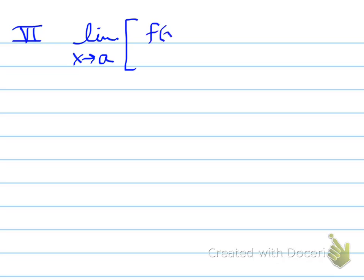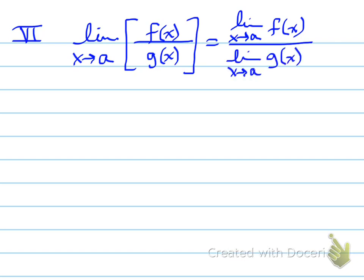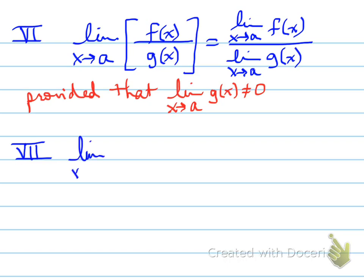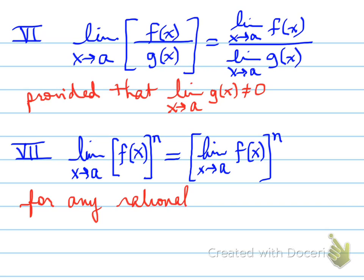So the limit as x approaches a of f of x over g of x is equal to the quotient of the individual limits. The limit of a quotient is equal to the quotient of the individual limits. Again, though, provided that the limit as x approaches a of g of x does not equal 0. Obviously, the denominator cannot equal 0. Part 7, the limit as x approaches a of f of x to the power of n is equal to limit as x approaches a of f of x all to the n. The limit of a power is equal to the limit of the base all raised to the exponent, and that's for any rational number n.